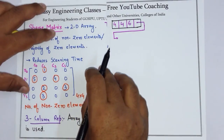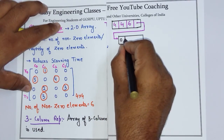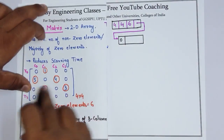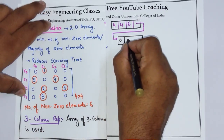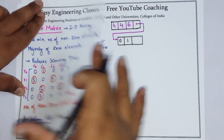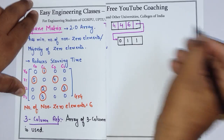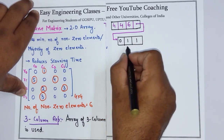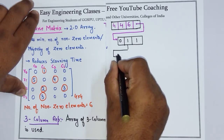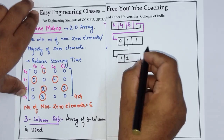The first row is row 0, so the head node will point to row 0. Then row 0 will have a pointer to the next row, which is row 1. And then the pointer to the column which contains the nonzero element — we can see which column is nonzero is column 1. Row 1 will point to the next row which is row 2.